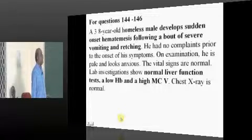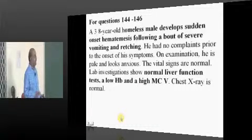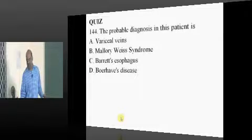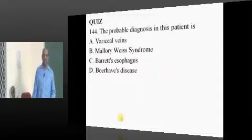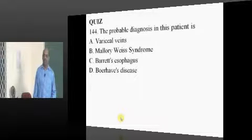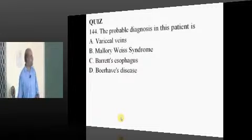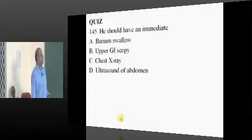Now, an 80-year-old homeless patient develops sudden onset of hematemesis, vomiting, retching, low Hb, and high MCV. What is your diagnosis? Vomiting and retching points to Mallory-Weiss. It is Mallory-Weiss.